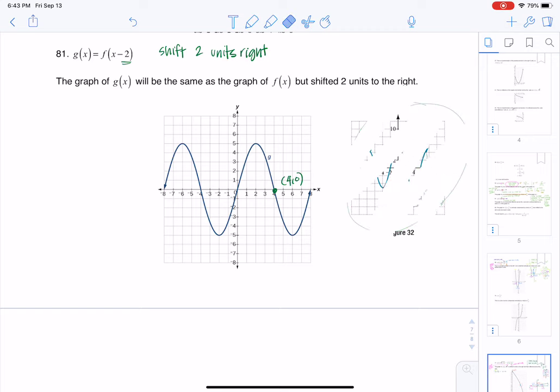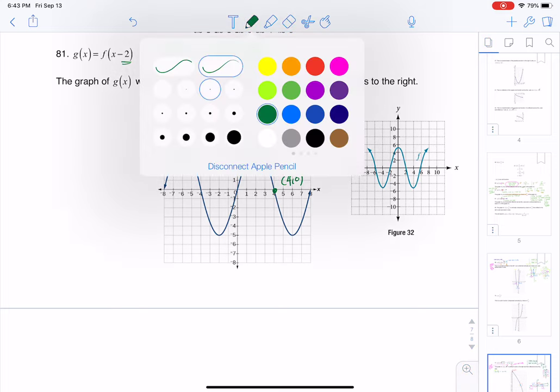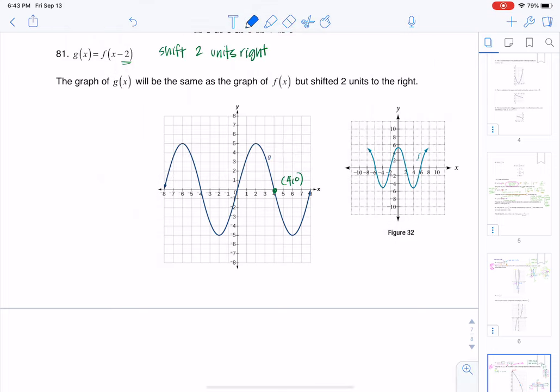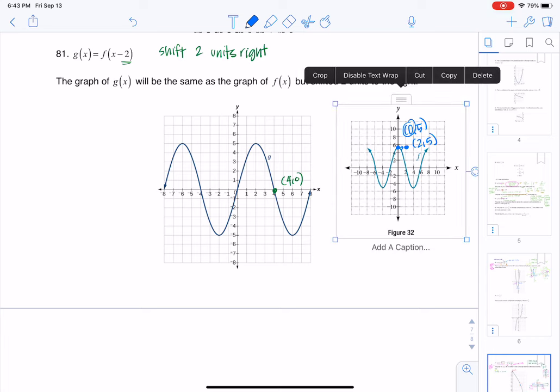All right. So kind of going off of that, let me erase all the shenanigans here. Let's try another ordered pair and see if we can figure out where that one went. So if I look at this ordered pair, this looks to be around (0, 5). I'm going to just approximate it. Now, if I want to move two units right, I would move this way. And again, if you're moving to the right, that's going to affect your x-coordinate. So this should now become the ordered pair (2, 5).